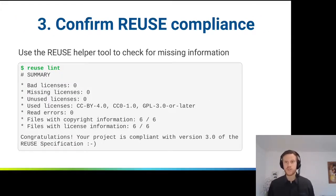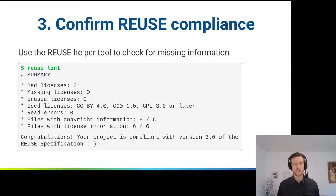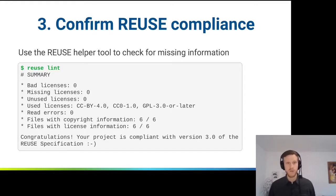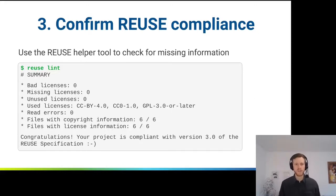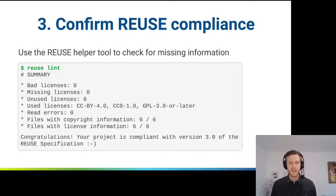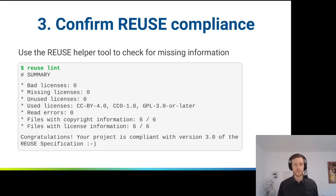The third step is to confirm REUSE compliance. For this we have a tool — this was one of the first things invented in REUSE — with one command: reuse lint. In our example repository, it tells us that we have information available for every six files and that the project is now compliant with the REUSE specification. That's the ideal output. We'll see later how this looks when the situation is not so ideal.